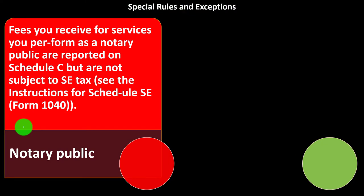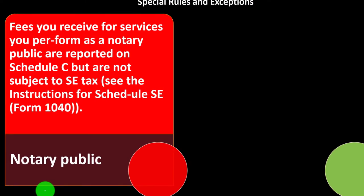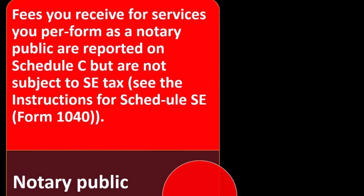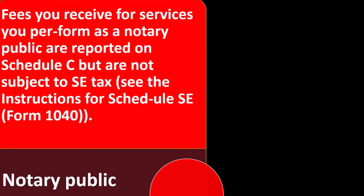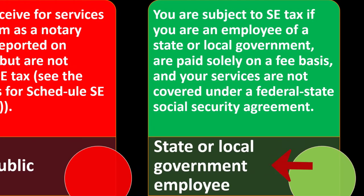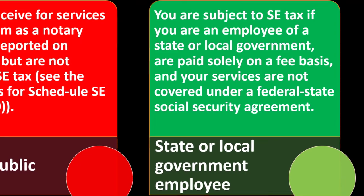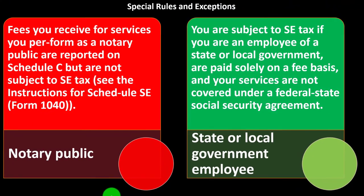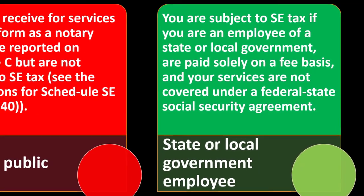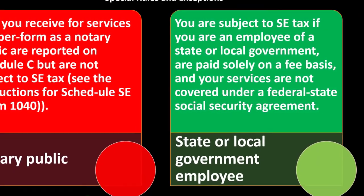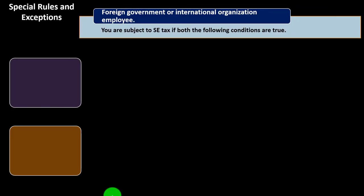Special rules and exceptions: notary republic — fees you receive for services performed as a notary public are reported on Schedule C but are not subject to the self-employment tax. See instructions for Schedule SE, Form 1040. State or local government employees: you are subject to self-employment tax if you are an employee of a state or local government, are paid solely on a fee basis, and your services are not covered under a federal-state Social Security agreement.